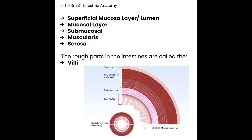The inner lumen of the small intestine has rough patches called villi. The villi increase the surface area of the intestine, improving how well we are able to absorb nutrients from the food that has been broken down and digested.